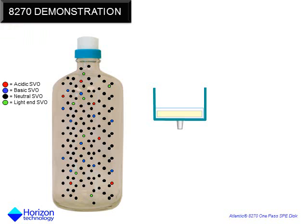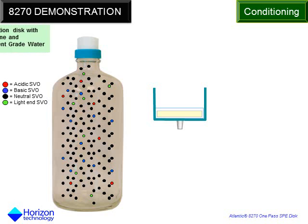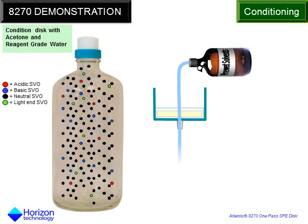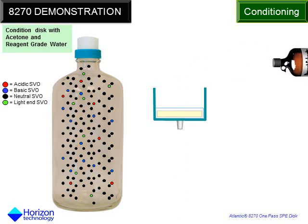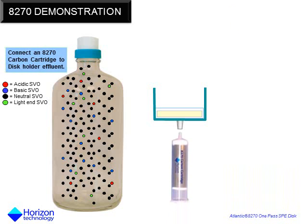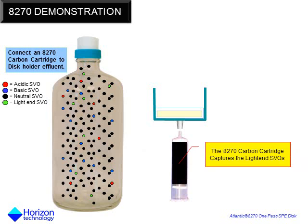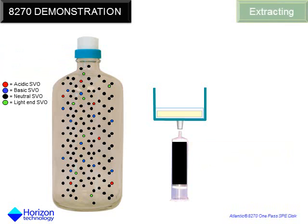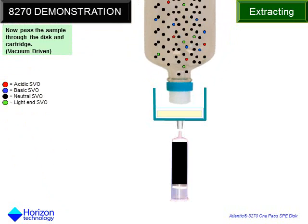An Atlantic 8270 one-pass disc is placed into the disc holder. The disc is conditioned with acetone followed by reagent-grade water. An 8270 carbon cartridge is placed downstream of the disc. The cartridge is positioned in reverse to take advantage of a back-flush mode, which permits efficient elution of captured compounds on the cartridge without having them pass through the entire packed bed. The bottle is then positioned over the disc and the sample is passed through both the disc and the carbon cartridge in one pass.